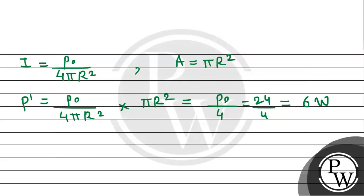This is the power received by the surface. Now we can find the force exerted on the surface: F = 2P'/c. This equals 2 × 6 watts divided by c, the speed of light in vacuum, 3 × 10⁸ m/s. Simplifying, it comes out to 4 × 10⁻⁸ newtons.